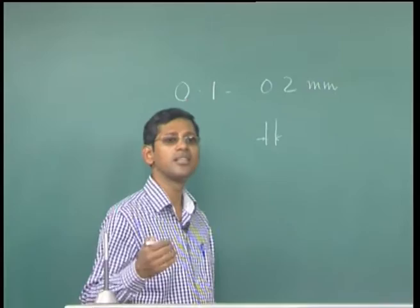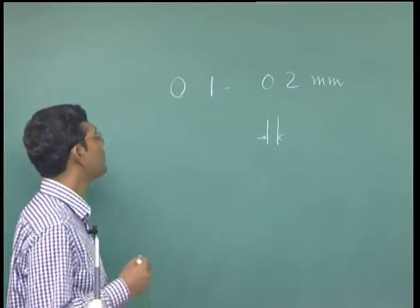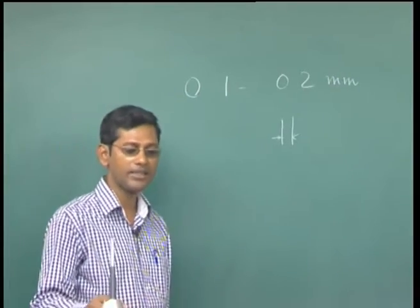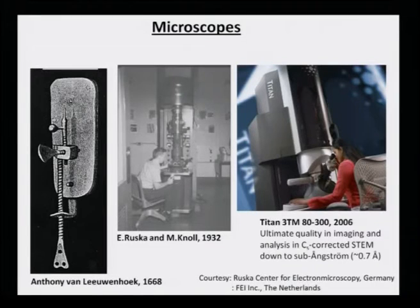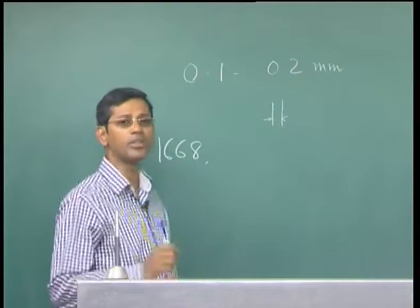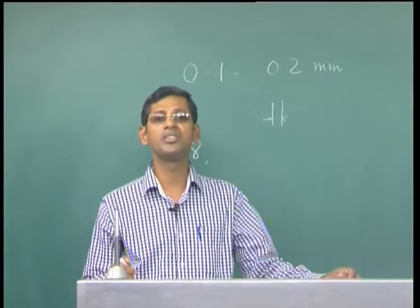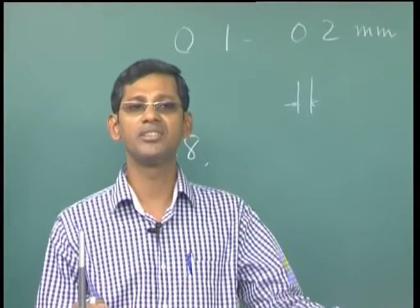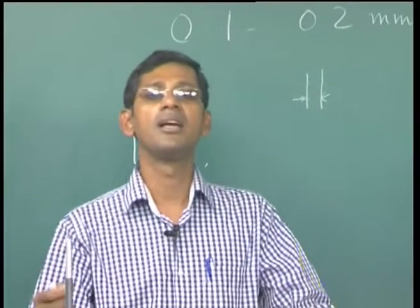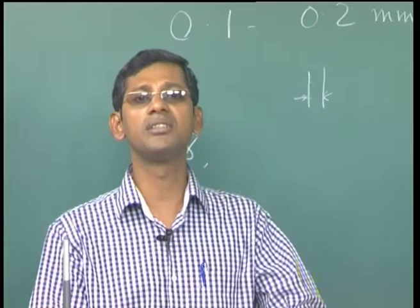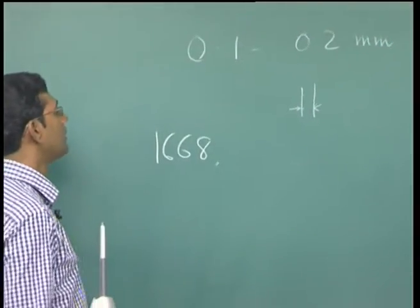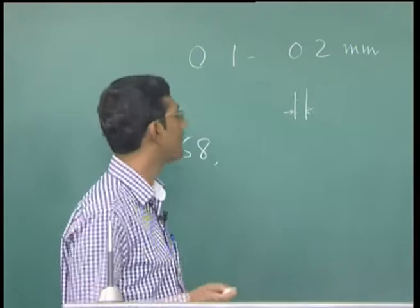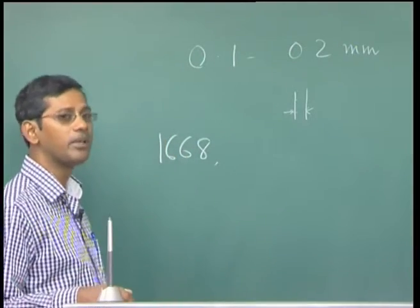The study of developing those kinds of machines began long back. In fact, in the 17th century, Leeuwenhoek first time in the year 1668 discovered the optical microscope, in which normal light was used to image many important algae or even small features present in small insects. That is the beginning of the microscope — the use of an instrument which can resolve objects finer than our eye can.